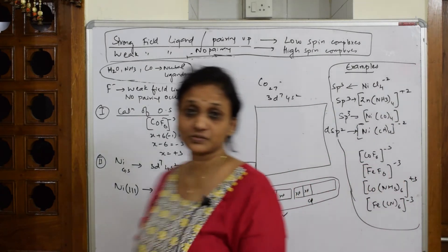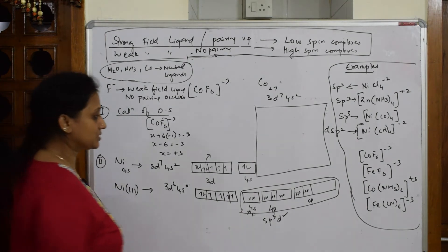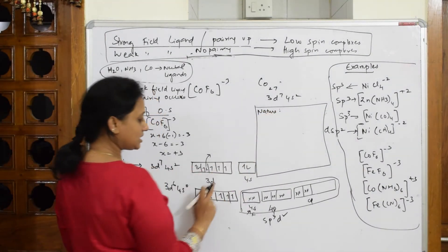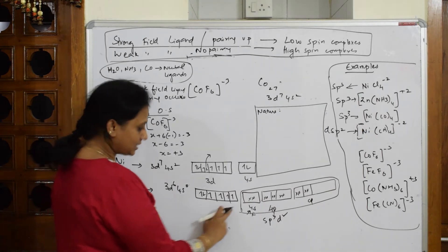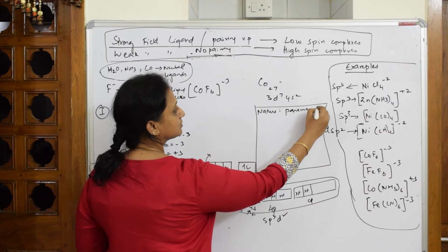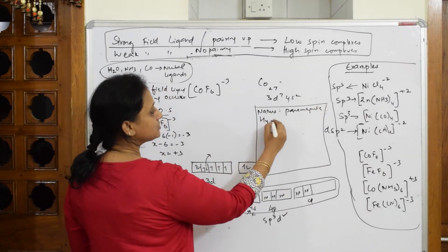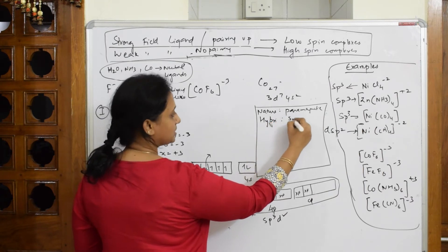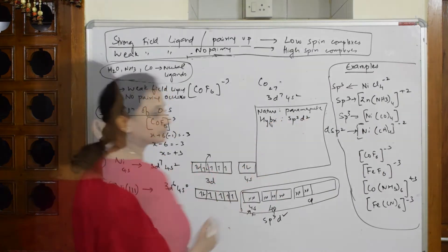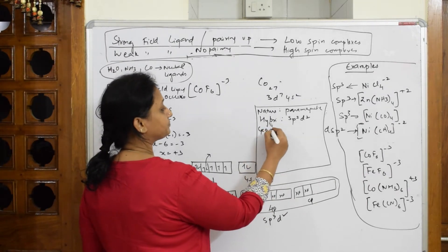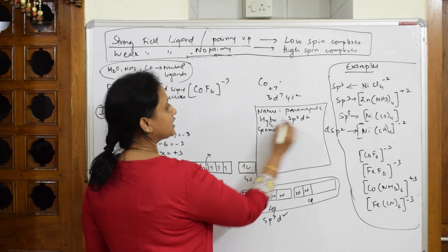I have to finish up the answer by writing all the parameters. How many parameters? First important thing: what is the nature? Paramagnetic or diamagnetic? It is paramagnetic. What is the type of hybridization? sp3d2.